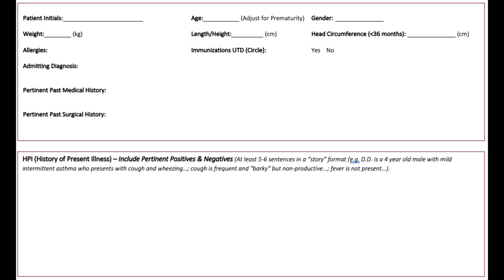Under history of present illness, you'll be including a short story of what brought the patient to the hospital. This should include how the symptoms started, where they went, if anywhere, before arriving to the hospital, and then what happened prior to their admission.